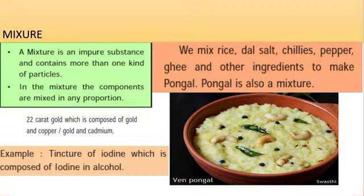They mix rice, dal, salt, chillies, pepper, ghee, and other ingredients to make pongal. Pongal is also an example of a mixture. A mixture can be a physical combination of two or more elements. Example: 22 karat gold, which is composed of gold and copper or gold and cadmium.